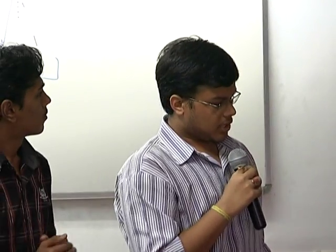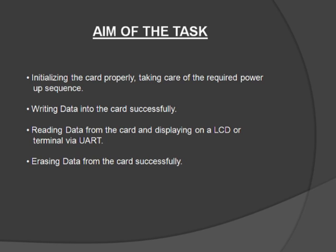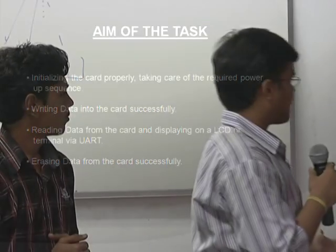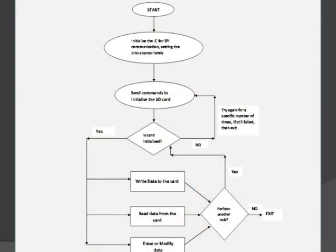Our task is divided into four parts: initialization of the card, writing data, reading data and displaying it on the LCD or terminal, and erasing data. The flow diagram shows that the main part of SD card interfacing is initialization. Once the card is initialized, we can write, read, or erase data. First we initialize the IC for SPI communication, then send commands and get a correct response to verify initialization.